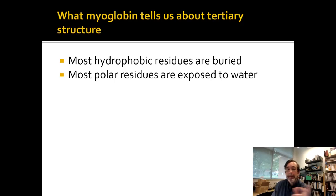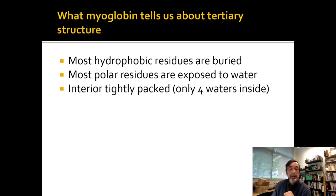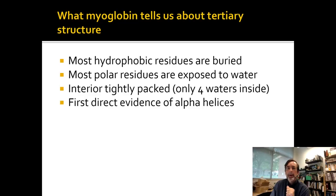Contrary-wise, if you did the same thing for polar residues, you would see that they're more exposed than buried. The interior is very tightly packed. For all those atoms coming together with all the restrictions they have from being part of amino acids, there's only space for four waters inside. It's a very well-packed structure. On the other hand, there are four waters inside, so there are little gaps where water can get in. But water gets in everywhere. The fact that there's only four means that it's actually a really tight 3D puzzle.